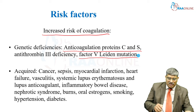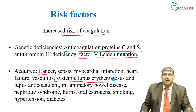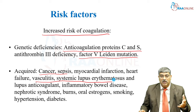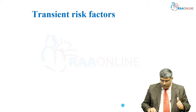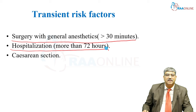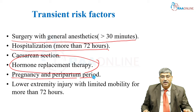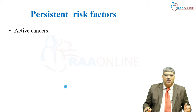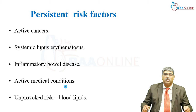Acquired causes for increased thrombus formation include cancer, sepsis, myocardial infarction, heart failure, vasculitis, systemic lupus erythematosus, lupus anticoagulant, inflammatory bowel disease, nephrotic syndrome, burns, oral estrogen, smoking, hypertension, and diabetes. Risk factors can be transient or persistent. Transient risk factors include surgery with general anesthesia greater than 30 minutes, prolonged hospitalization more than three days, caesarean section, hormone replacement therapy, pregnancy and peripartum period, and lower extremity injury with limited mobility for more than 72 hours. Persistent risk factors include active cancers, systemic lupus erythematosus, inflammatory bowel disease, active medical conditions, and unprovoked risk factors like increased blood lipids.